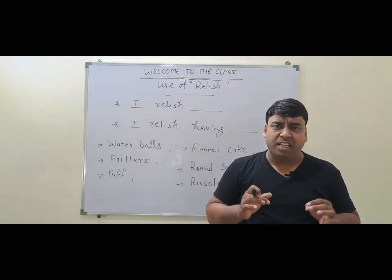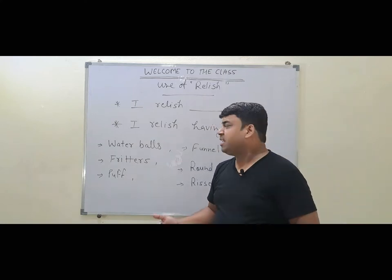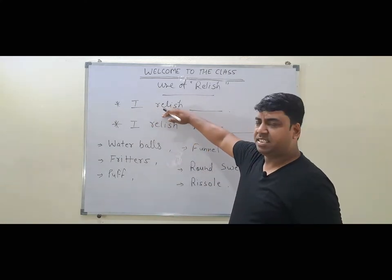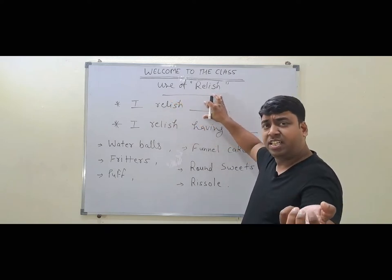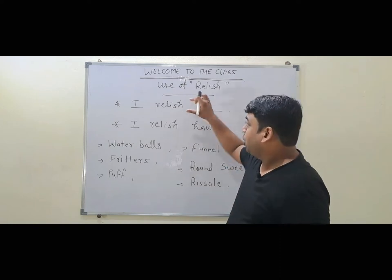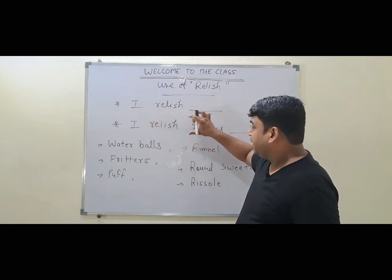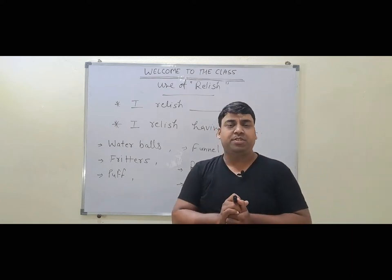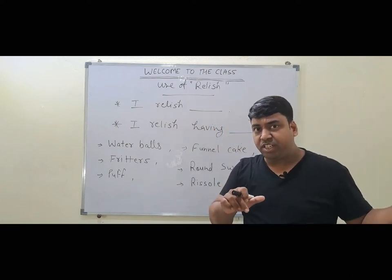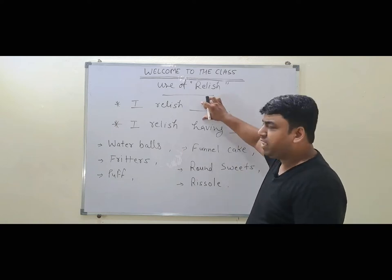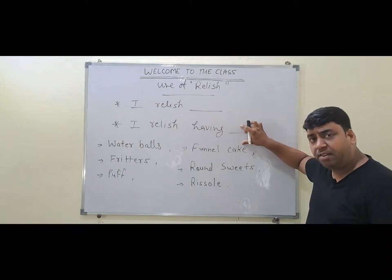Whenever you enjoy something, you can use the word 'relish' in a sentence. For example, 'I relish' something. And if you want to use an action form, 'relish' is always followed by 'having' — so it becomes 'I relish having'. You have two ways: either use relish directly with a noun, or use 'relish having'.